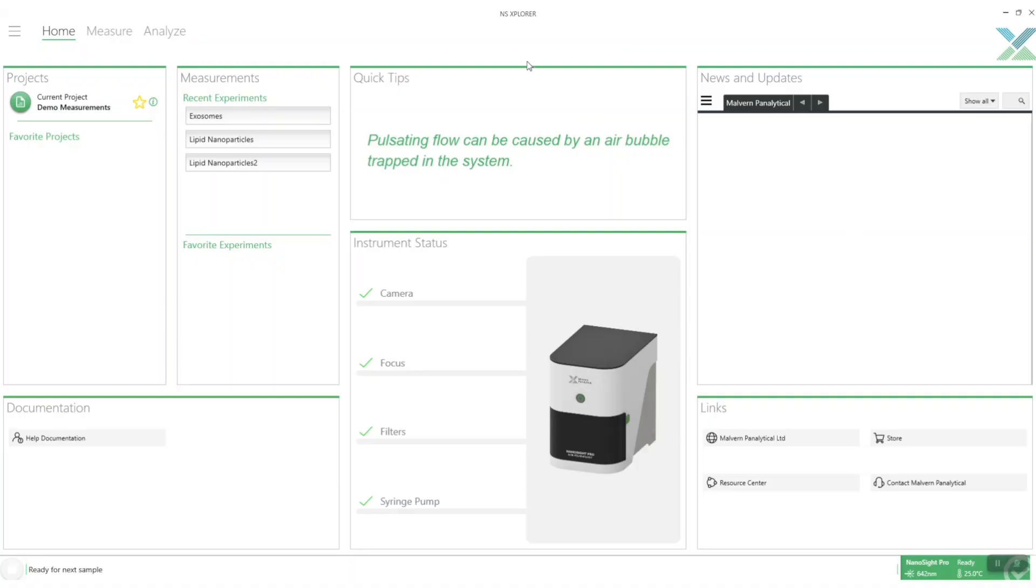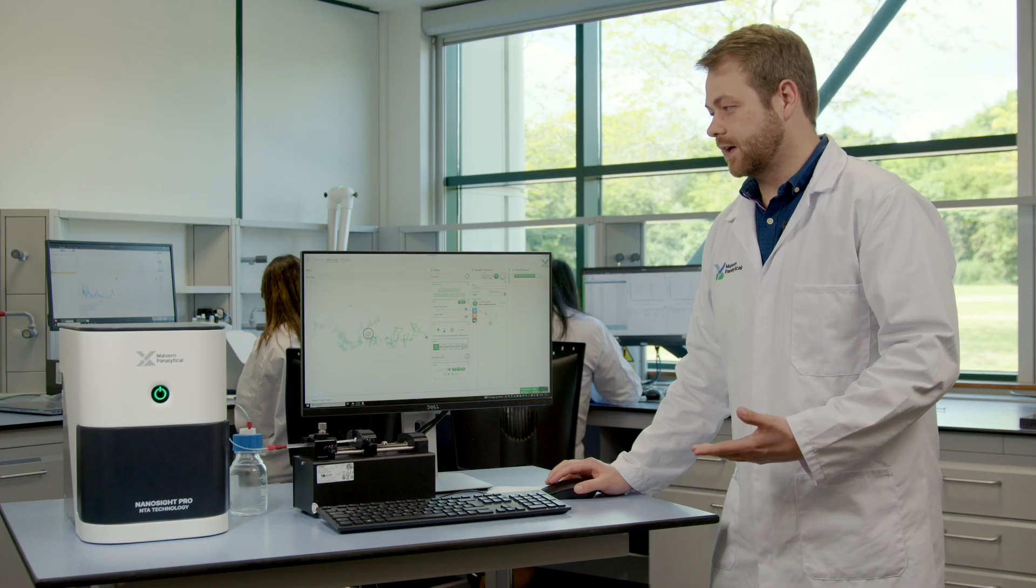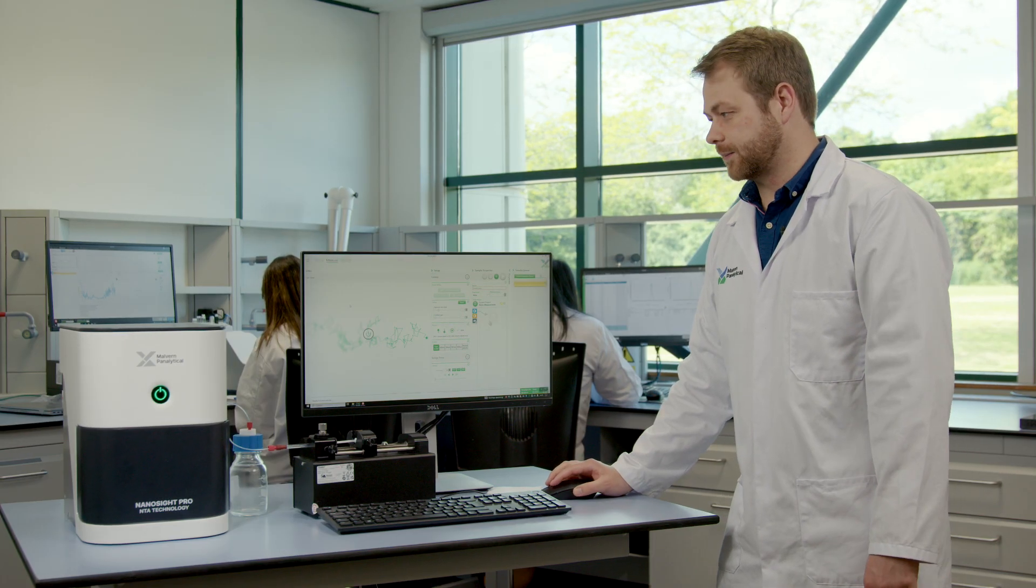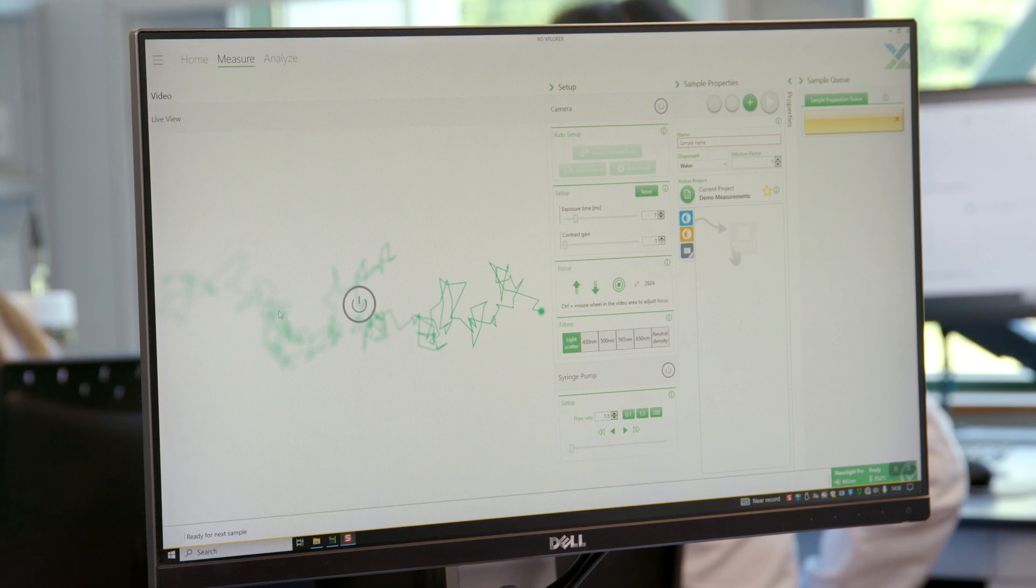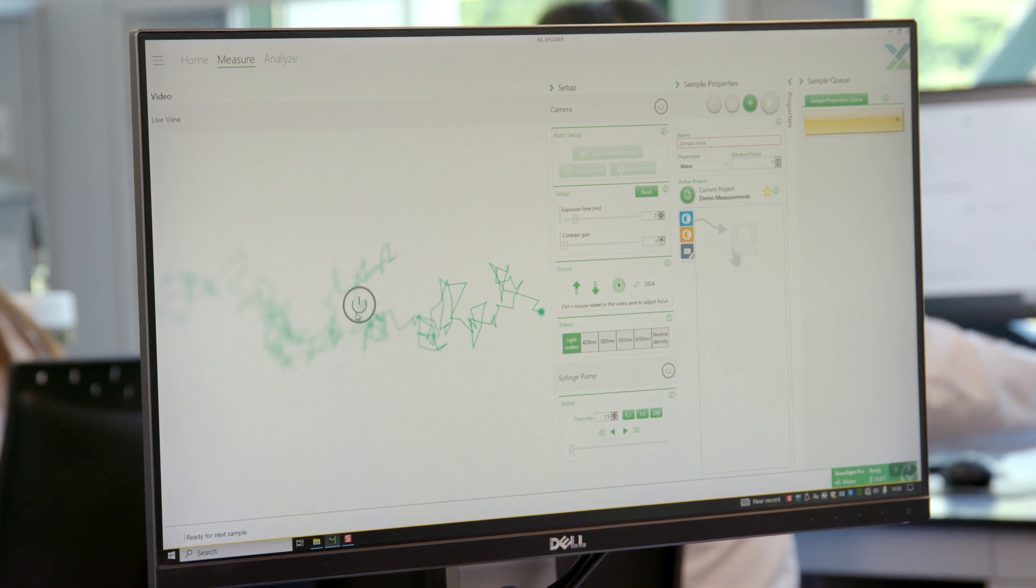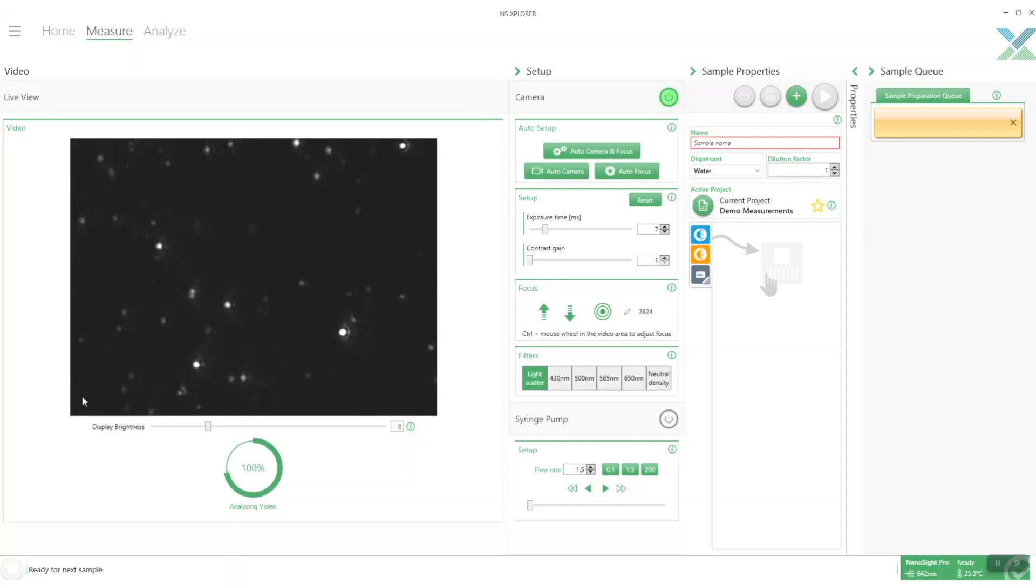Where we set up our measurements is in the measure page. Here is where we can set up our measurements and capture them. If we start the camera immediately we should see our particles. Here we can see these dots dancing around on the screen and each one of these represents a particle.